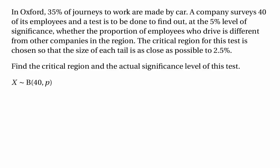We have a binomially distributed random variable. The number of employees driving to work by car has a binomial distribution where 40 is the number of trials and p is the probability of success. The null hypothesis is that p equals 0.35 — the same proportion as Oxford as a whole. The alternative hypothesis is that p is not equal to 0.35. This is a two-tailed test, because p not equal to 0.35 means the null hypothesis can be rejected either because the number driving to work is very small or because it's very large.